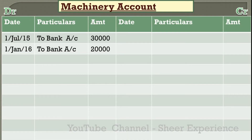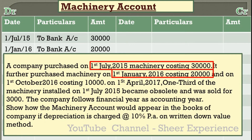The format is a ledger format with three columns on the debit side and three on the credit side. In the first financial year (1st April 2015 to 31st March 2016) we purchased two machines, entered on the debit side. For machine 1: date 1st July 2015, particulars 'To Bank Account', amount $30,000. For machine 2: date 1st January 2016, particulars 'To Bank Account', amount $20,000. We write 'To Bank' because the journal entry debits machinery and credits bank.